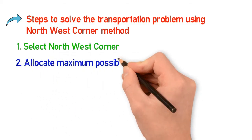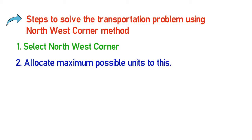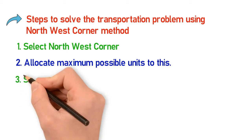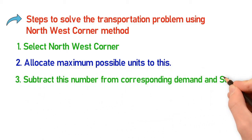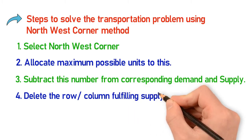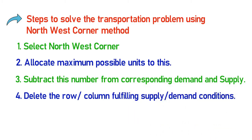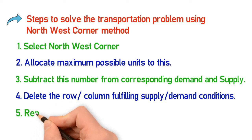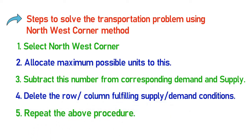After selecting the Northwest Corner, we have to allocate the maximum possible units to that cell depending upon the demand and supply numbers. The third step is to subtract this number from the corresponding demand and supply. The fourth step is to delete that particular row or column fulfilling the supply or demand condition. Then we repeat the above procedure.